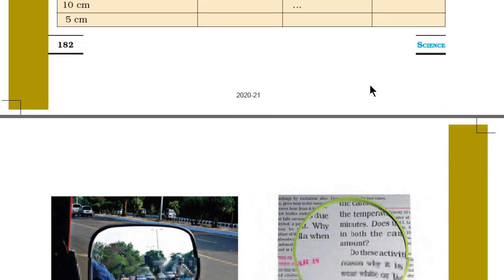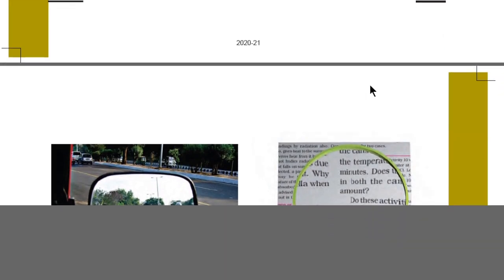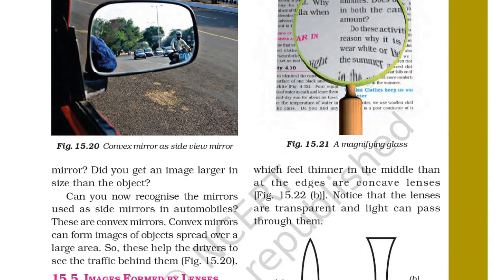You can see here the rear mirror of a car or a bus. Do you get an image larger in size than the object? The mirrors used on the sides of automobiles are convex mirrors. Convex mirrors can form images of objects spread over a large area, which helps the driver to see the traffic behind them — they can see the full view of traffic behind them with the help of a convex mirror.